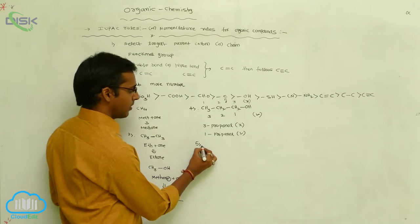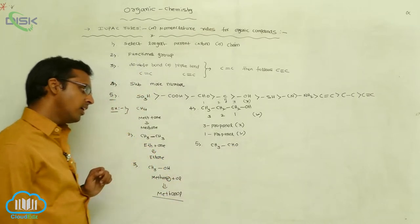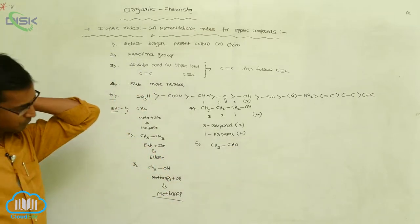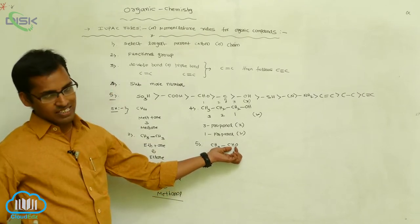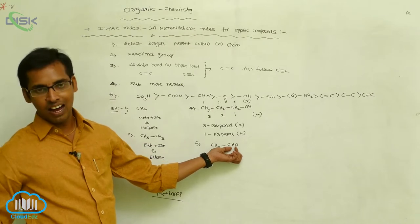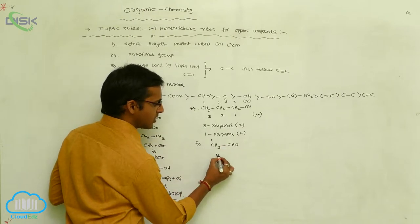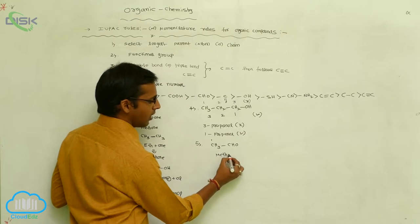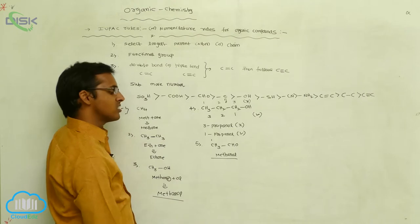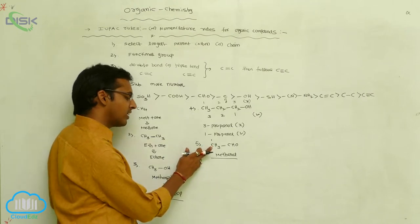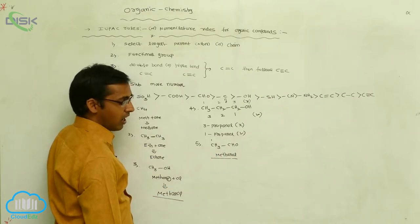Next example: consider CH₃CHO. In CH₃CHO, the CHO is your aldehyde functional group. If the aldehyde functional group is present, the secondary suffix is '-al'. According to that, the functional group is at the first carbon. One carbon means the root word is 'meth-'. So the name is methanal. This is derived from alkane, where the 'e' is replaced with '-al'. These are your aldehyde group.